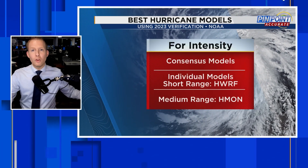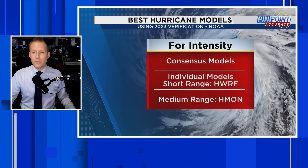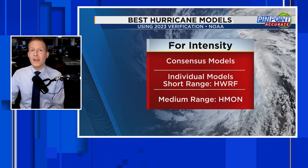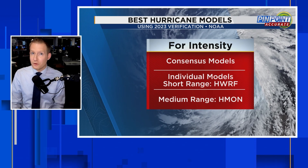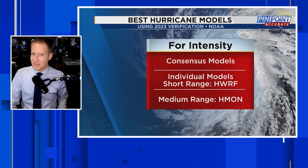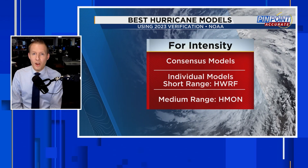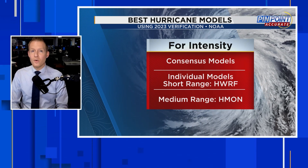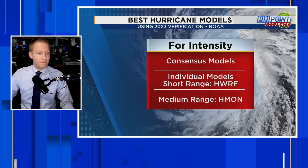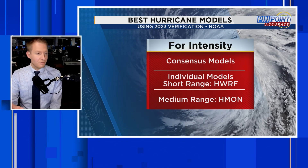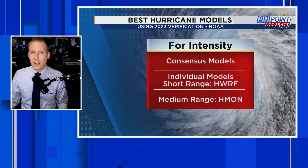One more thing on intensity: the GFS and Euro — those global models — should not be used for intensity. They are always going to underdo it. They're better for track, but for intensity you want to look at the specialized hurricane models. The GFS and Euro are likely going to undersell the intensity of these storms.